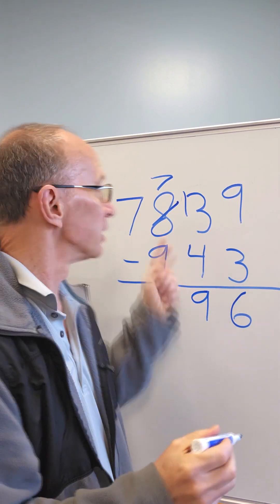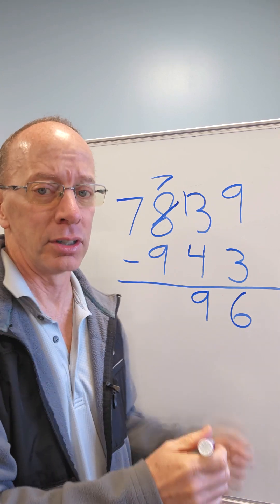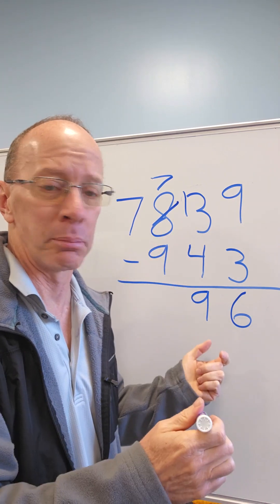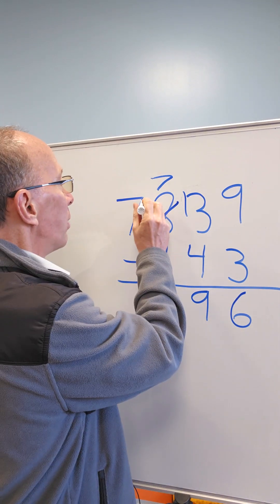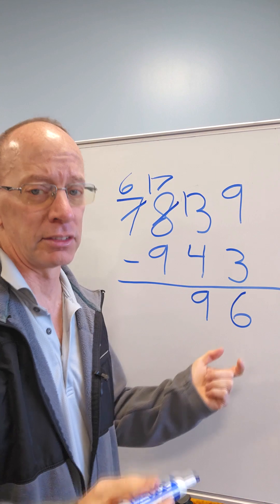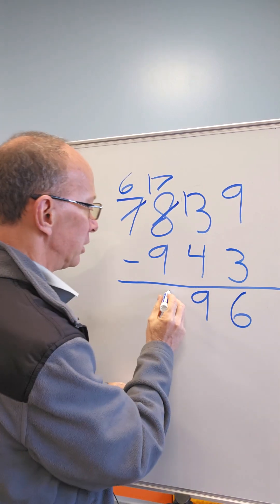Now I subtract the hundreds. 7 minus 9. Again, can't do it. Number on the top, too small. Need to make it bigger. So I need to borrow one from the thousands right over here. So borrow one from the 7, which will be a 6. This turns into 17. 17 minus 9. Yeah, 8. Don't be late.